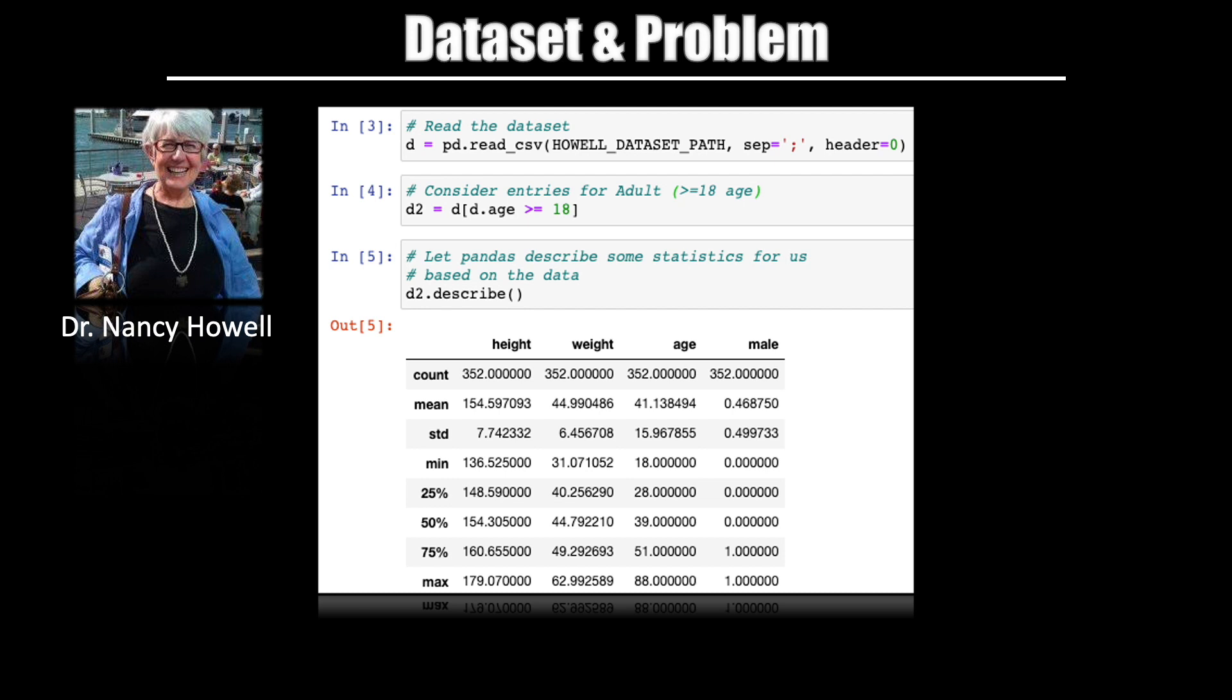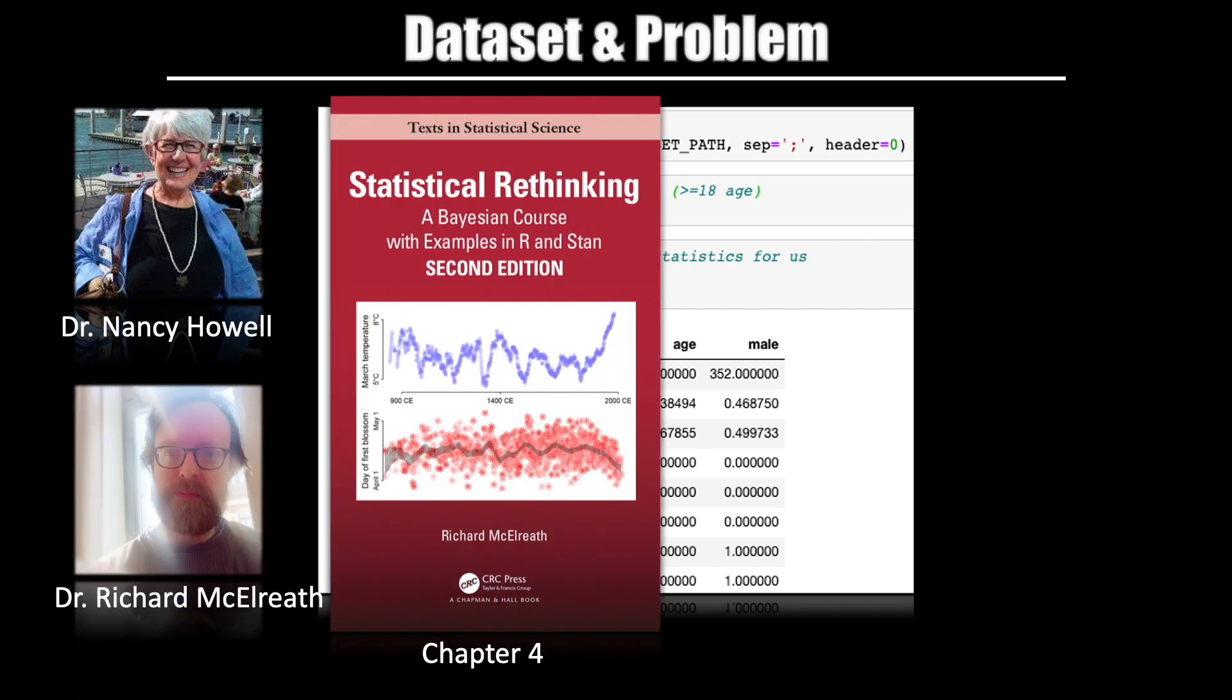And to do this exercise, I have selected a data set collected by Dr. Howell. It is a data set of demographic data from Kalahari Kungsan people. You can see that there are four fields: height, weight, age and gender. And for our exercise, we will pick only entries for adults, where the age entries are greater than or equal to 18. The model for this data set is taken from Statistical Rethinking, a book on probabilistic modeling, Bayesian probabilistic modeling by Dr. Richard McElreath. Now, I have recommended this book in the answers to comments on various other tutorials on my channel, as this is one of the best books you will read on this topic. Personally, for me, this book was instrumental in understanding this field. And to this date, it remains the best book that I have read on this subject. It's a brilliant book by an extraordinary teacher.